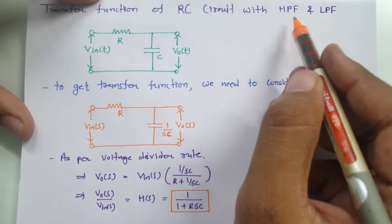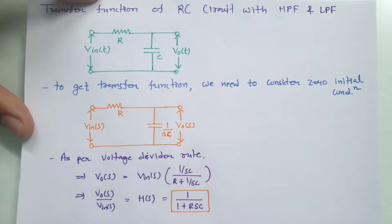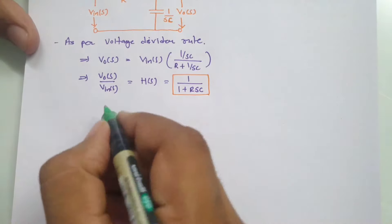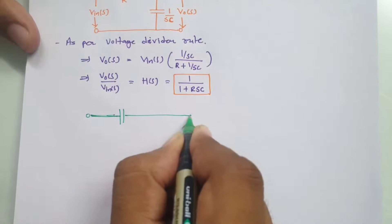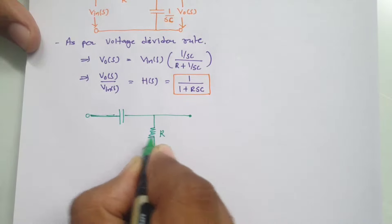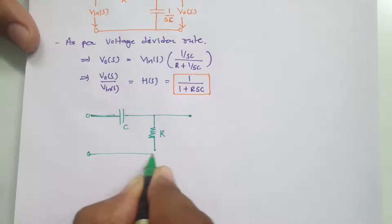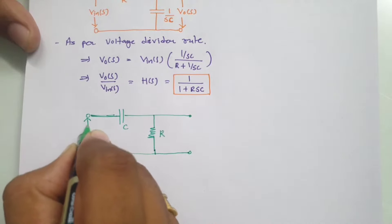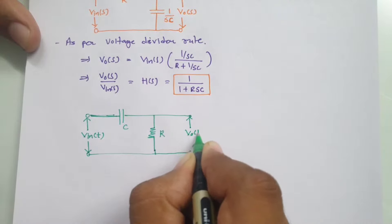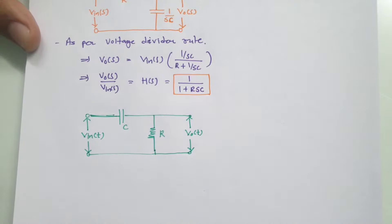Let me now explain the high pass filter RC circuit, and then we will see the frequency response at the end. For the high pass filter RC circuit, the capacitor and resistor positions are swapped compared to the low pass filter — there is a capacitor in series with the input, and the output is taken across the resistor R. With input V_in(t) and output V_out(t), this is the RC high pass circuit.